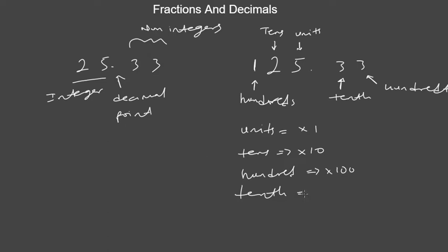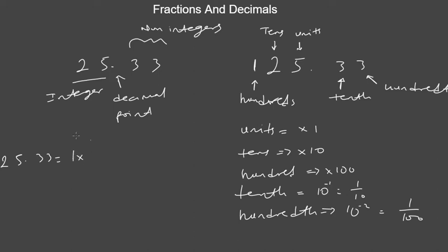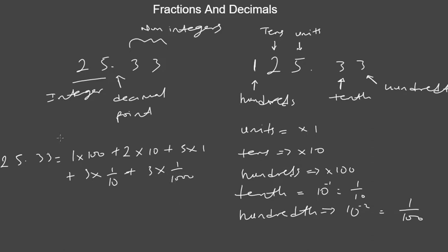So you can express 125.33 as: 1 times 100, plus 2 times 10, plus 5 times 1, plus 3 times 1 over 10, plus 3 times 1 over 100. If you add all of this up, you get that decimal number. This is what the decimal number system is all about.